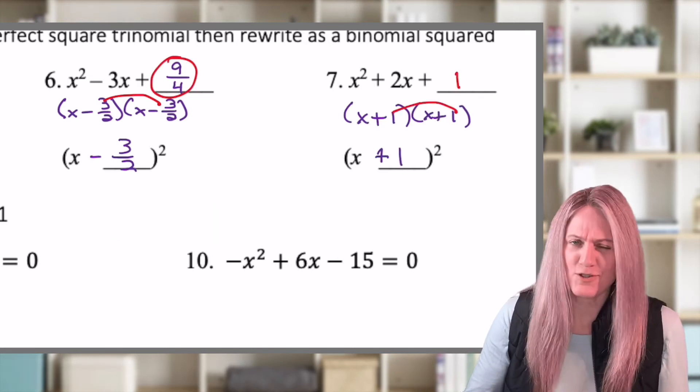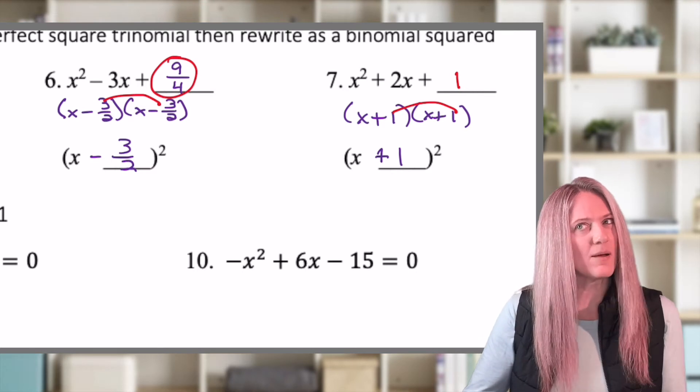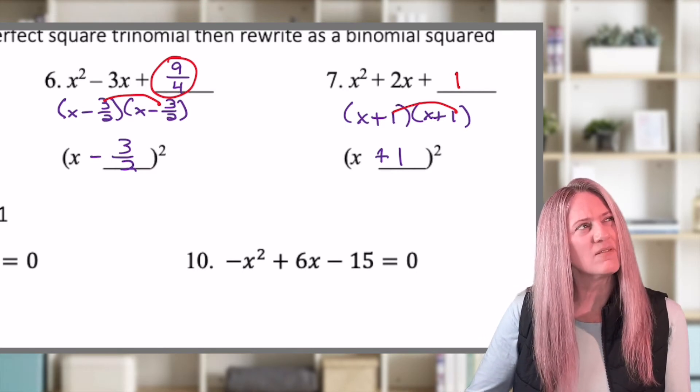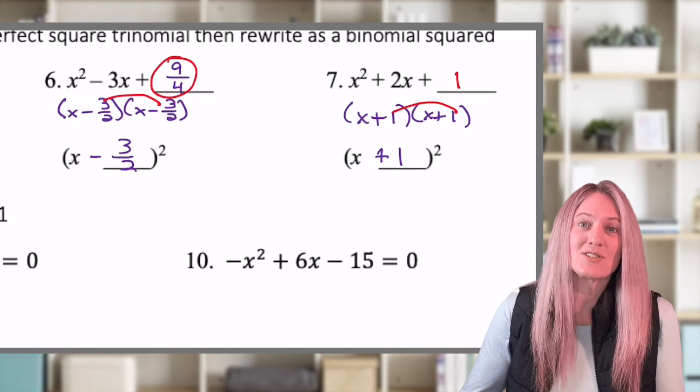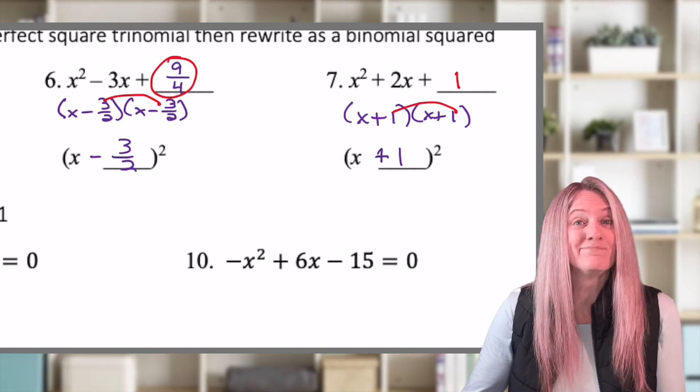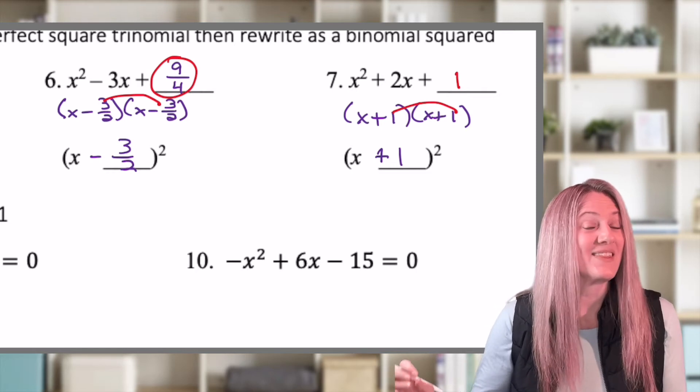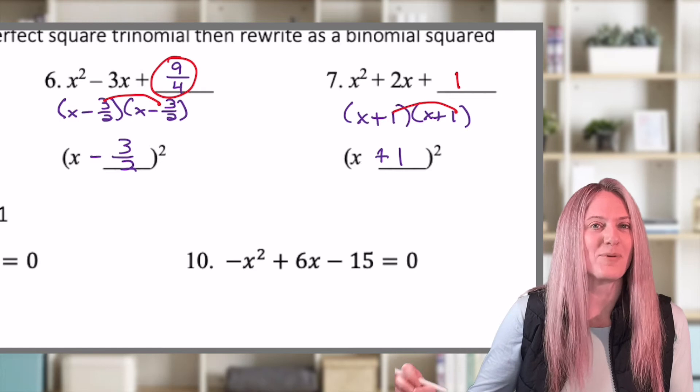Were you tempted to change 3 halves into 1.5? Because I kind of was. But then think about it. 1.5 times 1.5. That's not as easy as just 3 halves times 3 halves. 3 squared is 9. 2 squared is 4. Boom.